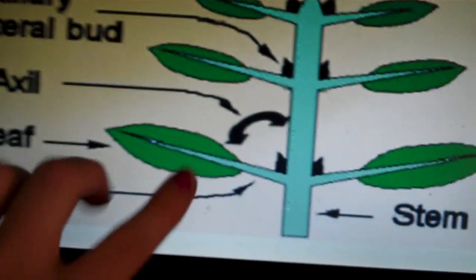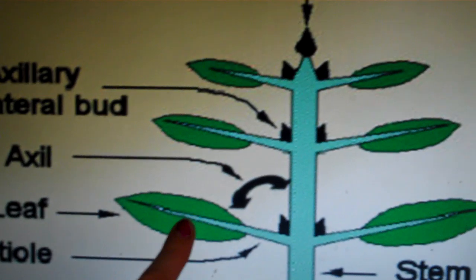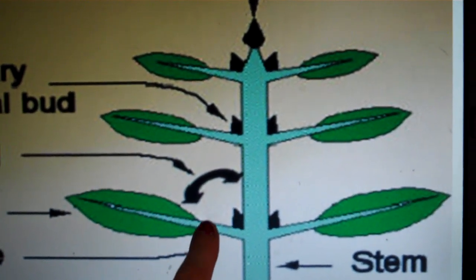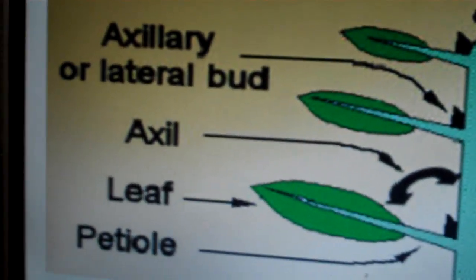We also have leaves which will be discussed in a later chapter. And then the angle of the petiole to the stem is called an axil.